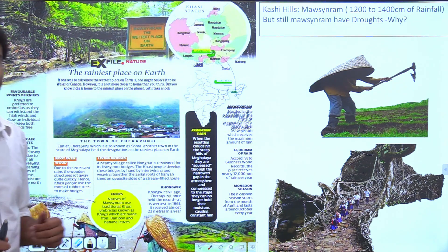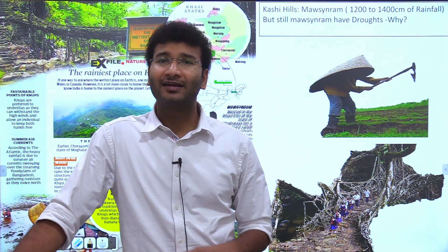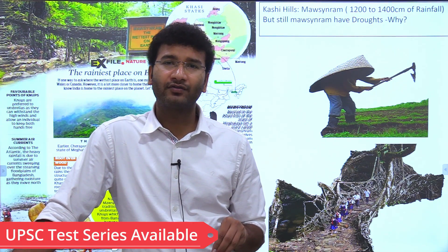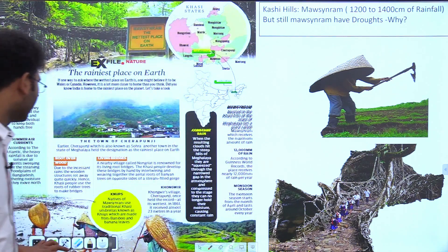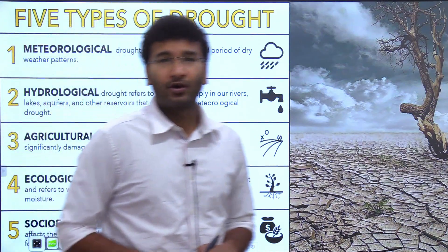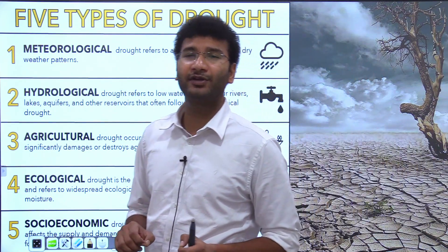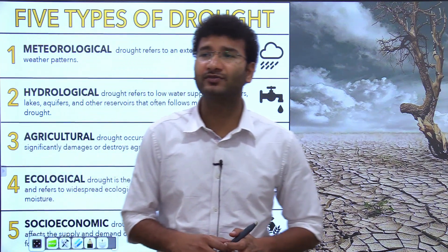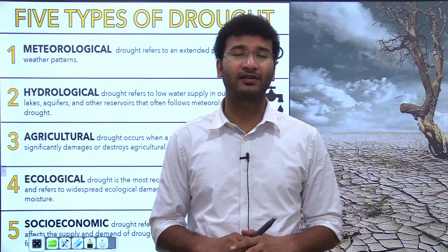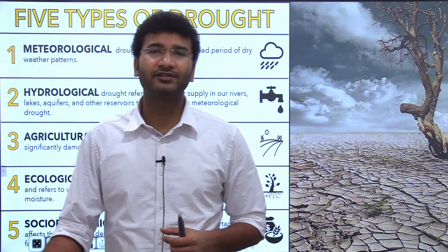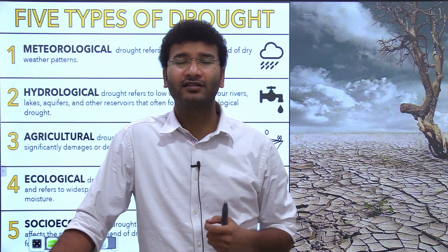The article says that on an average, Mawsynram receives 1400 cm of rainfall. But the area, in spite of this good amount of rainfall, experiences droughts. The drought visible here is associated with soil moisture. Droughts are of different types: meteorological drought, hydrological drought, agricultural drought, ecological drought, and socio-economic drought. We generally think that if rainfall is less then it is a drought, but for the government the definitions are different.